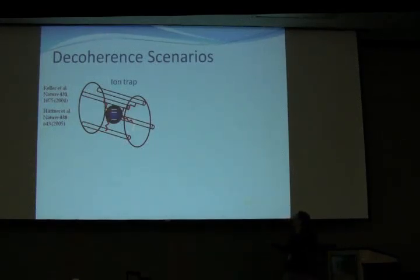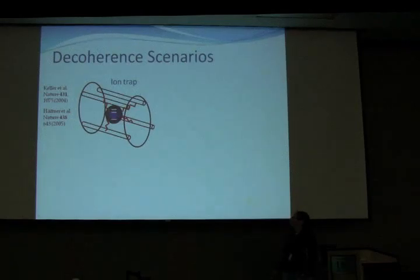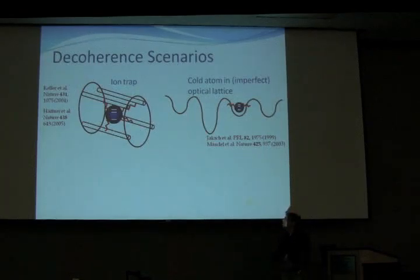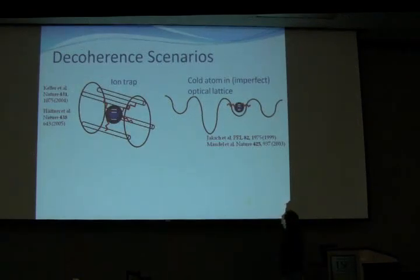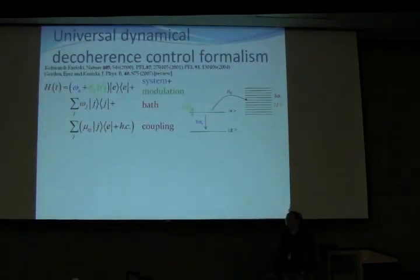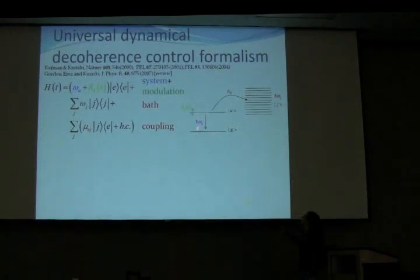First I want to anchor this theoretical talk by discussing the physical systems I'm considering. In the ion trap, for example, the internal levels of the ion serve as a qubit, and they can couple to vibrational modes of the trap, resulting in decoherence, as well as magnetic fluctuations causing dephasing. Similarly, cold atoms in an optical lattice or an ion in a cavity couple to vibrational modes and decohere in the same way.